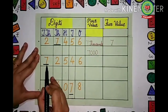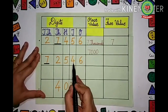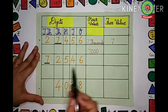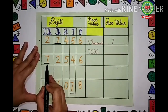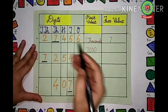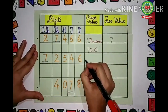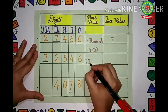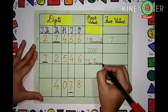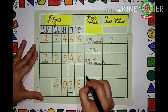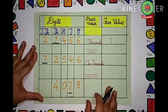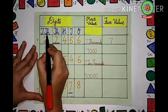Let us take the next example. Read the number: 7, 2, 5, 4, 6. We have to tell the place value of the underlined digit — that is 7 again. 7 is coming under which place value? 10,000's. So the place value of 7 is 10,000's. We can write down 7 with four zeros — that is 70,000 — because 7 is in the 10,000's place.